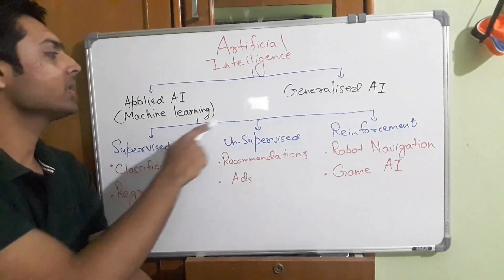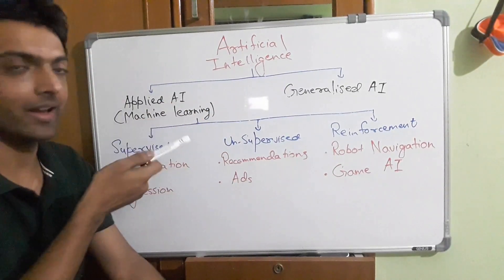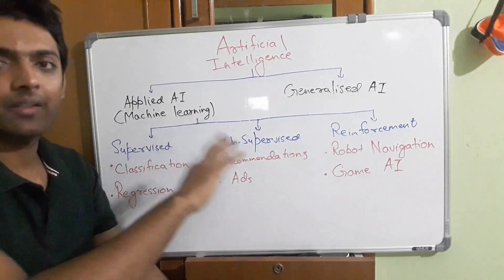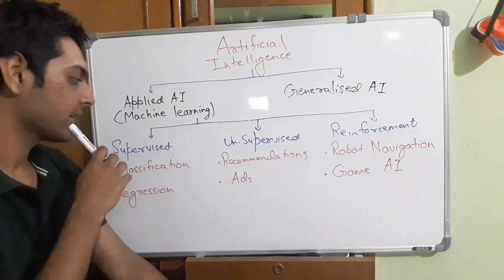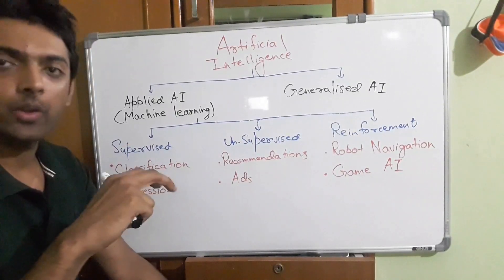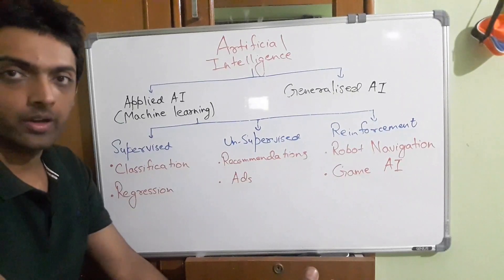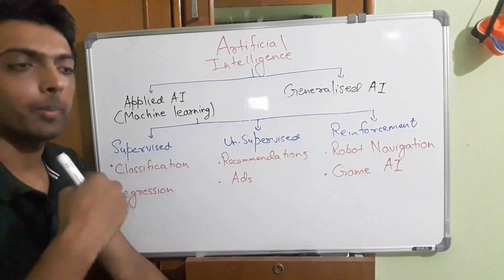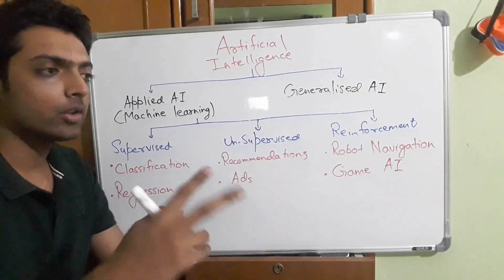Applied AI — which we call machine learning — has three different segments. The first one is supervised learning. In supervised learning, you give input to a neural network, you give the output to your neural network, and that network learns a pattern between input and output.